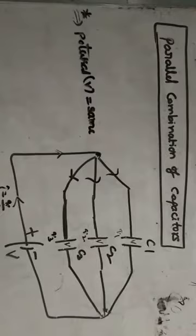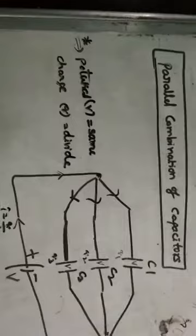What about the charge? Here I am connecting a battery, so current I = Q/T is flowing. At this end, current divides — current divides means charge will divide. So the charge on capacitor 1 is Q1, charge on capacitor 2 is Q2, charge on capacitor 3 is Q3. This is a very important point: charge on the plates of each capacitor is not the same; whatever total charge comes from the battery, it will divide among the capacitors.